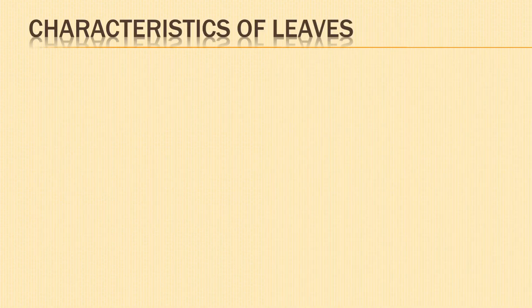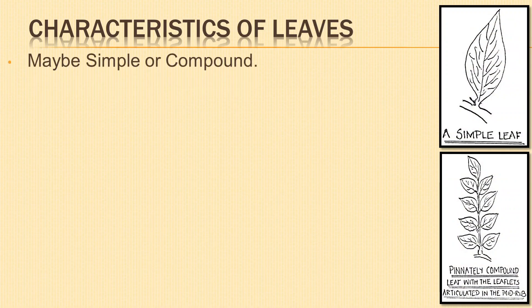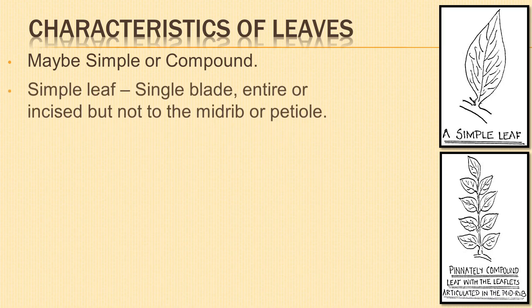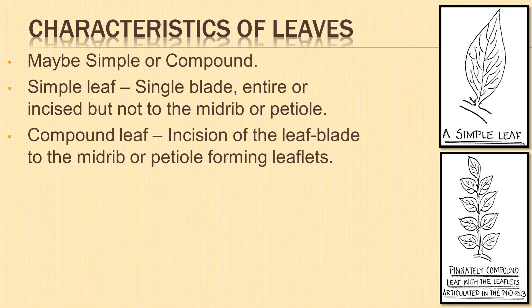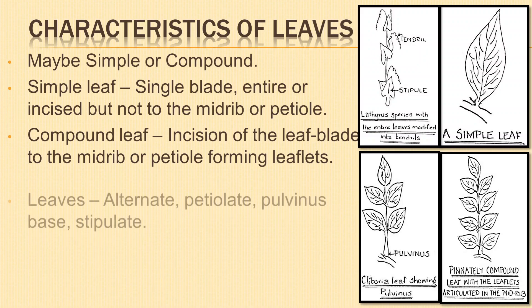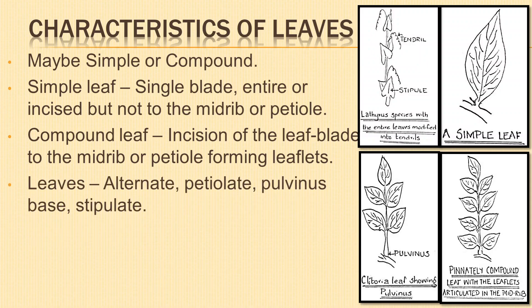The leaves may be simple or compound. A leaf is simple when it consists of a single blade, which may be entire or incised but not down to the mid-rib or the petiole. A leaf is compound when the incision goes down to the mid-rib or petiole, breaking the leaf into several leaflets. Leaves are mostly alternate, petiolate, and the leaf base is swollen, known as pulvinus.